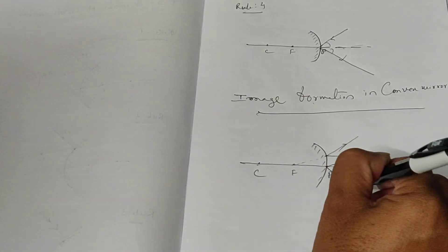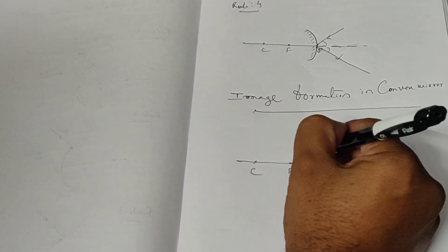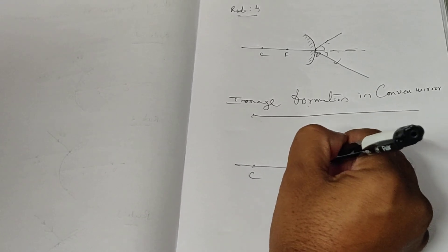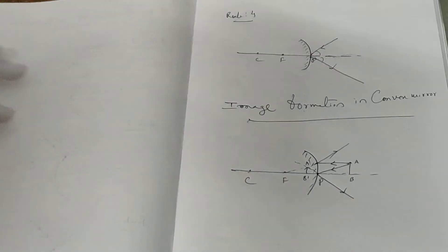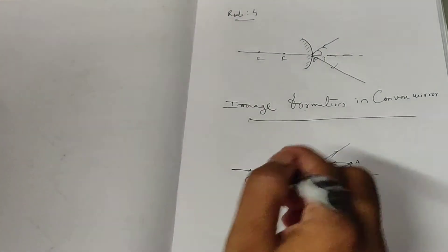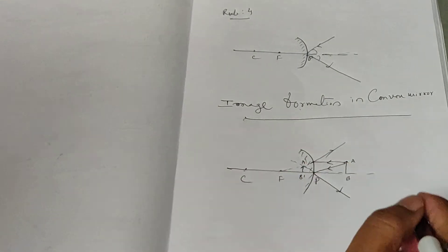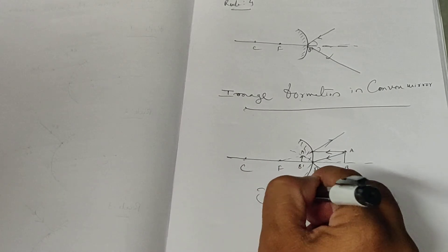It directly reflects back like this, and any light ray making some angle reflects back again in this direction. All these light rays are reflected, and if we extend these light rays, they form the image. The image is called A dash and B dash. In convex mirrors, the image is always virtual, erect, and diminished.